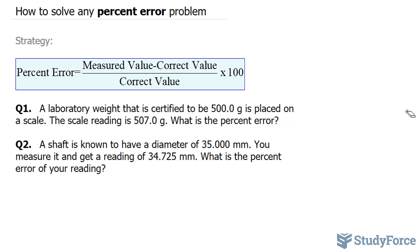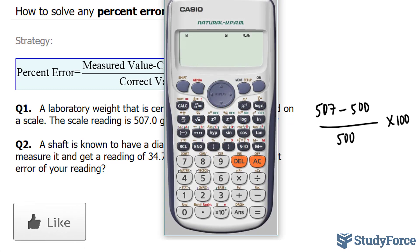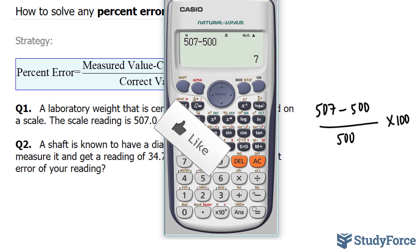The measured value here is 507. We will subtract this from 500 and divide it by 500. Subsequently, we multiply the whole thing by 100. So using our calculator, 507 minus 500 divided by 500 multiplied by 100 gives us 7 over 5 or simply 1.4.